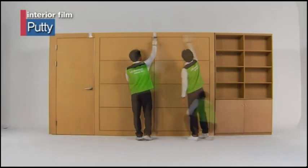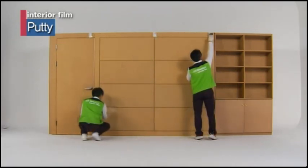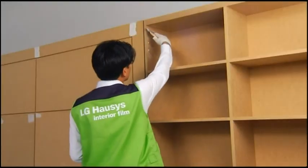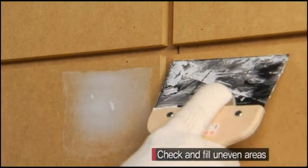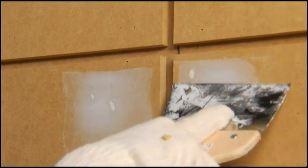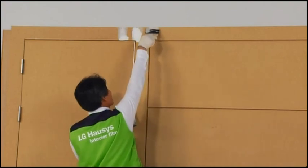The putty process will smooth out the adhesive surface. Use the putty to fill in holes, nail marks, dents, and plywood connections.